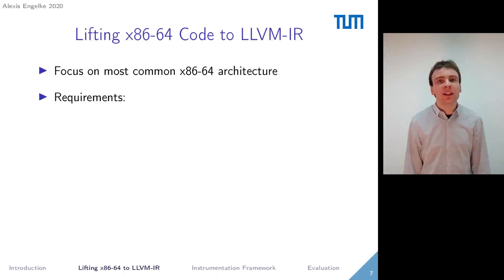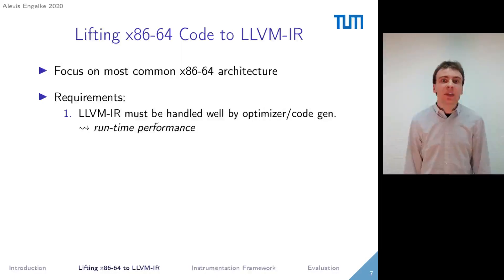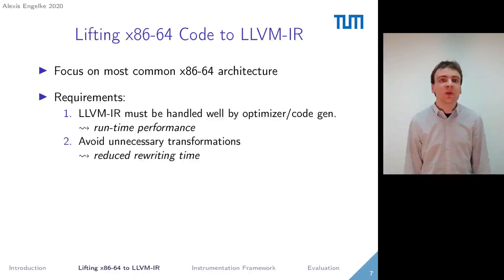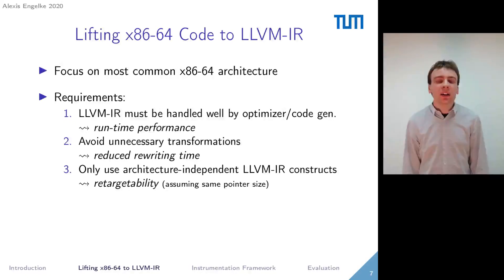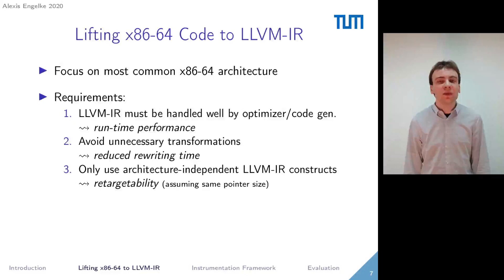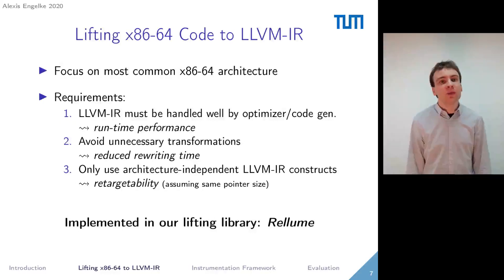For our lifter, we focus on the most common x86-64 architecture, although the concepts apply to other architectures as well. We determine three main requirements. First, the LLVM IR must be good, in the sense that it can be handled well by existing optimization and code generation passes — critical for runtime performance. Second, we strive to avoid unnecessary and complex transformations after lifting to reduce rewriting time. Third, we restrict ourselves to only architecture-independent LLVM IR constructs, meaning no inline assembly or target-specific intrinsics, which leads to retargetability. We implement this in our lifting library, which we call ReLU.